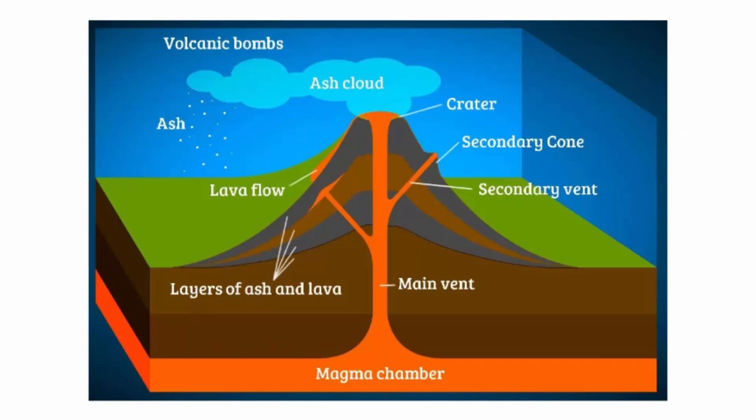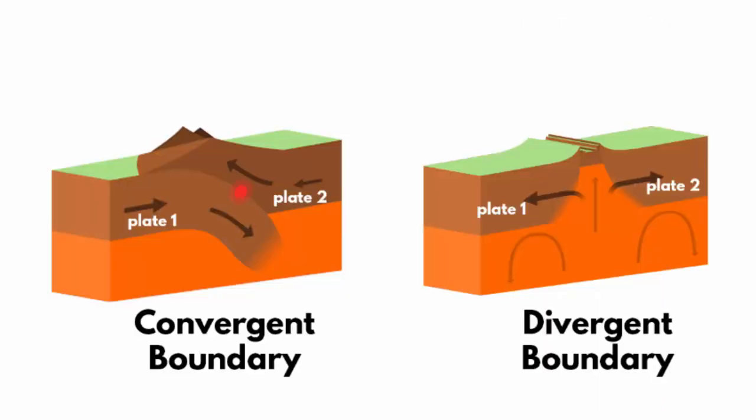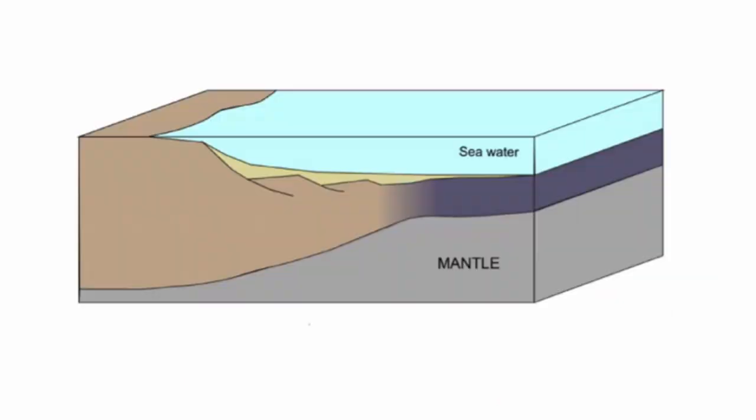How does magma come out of the Earth's crust? It can happen in two ways: when tectonic plates collide or move apart. You have to understand that tectonic plates are of two types — one is a continental plate and the other is an oceanic plate.